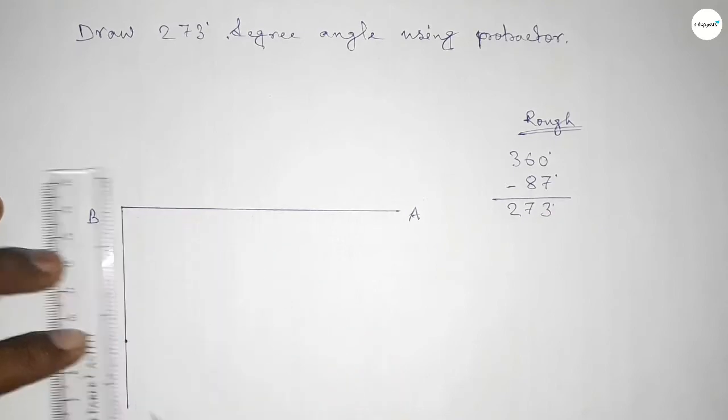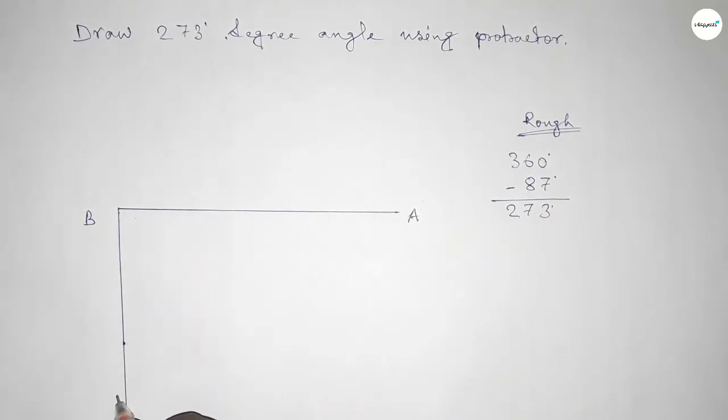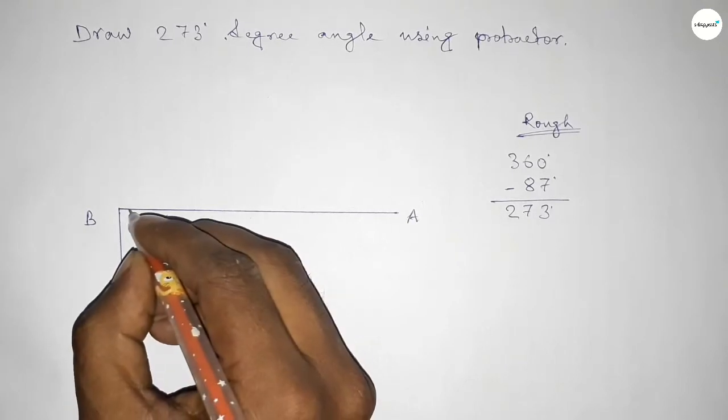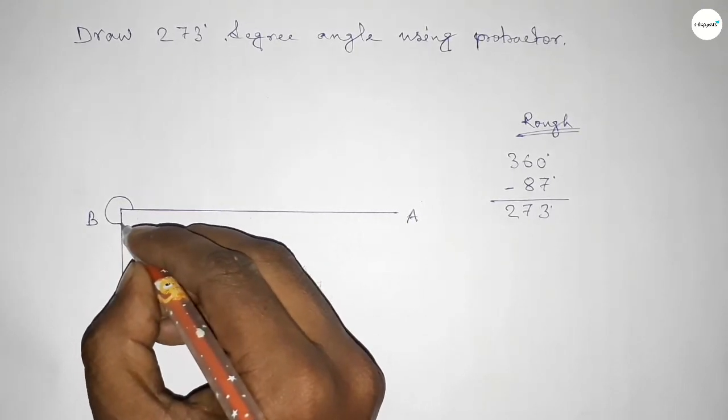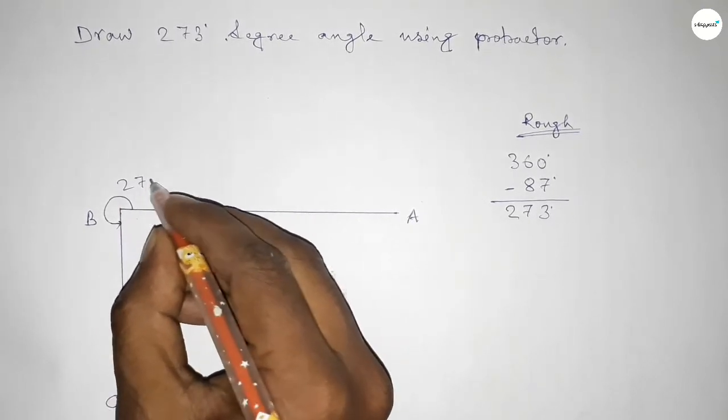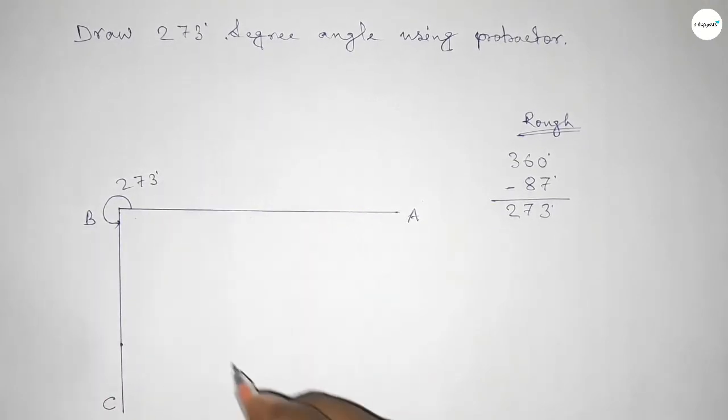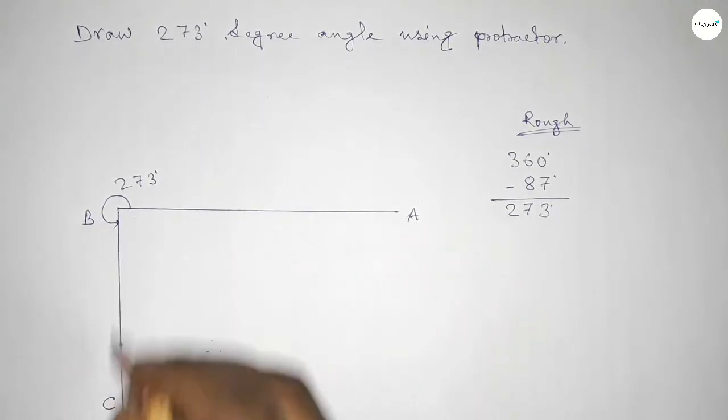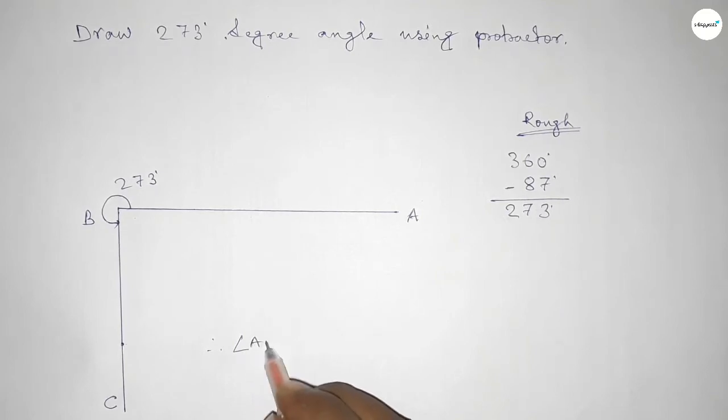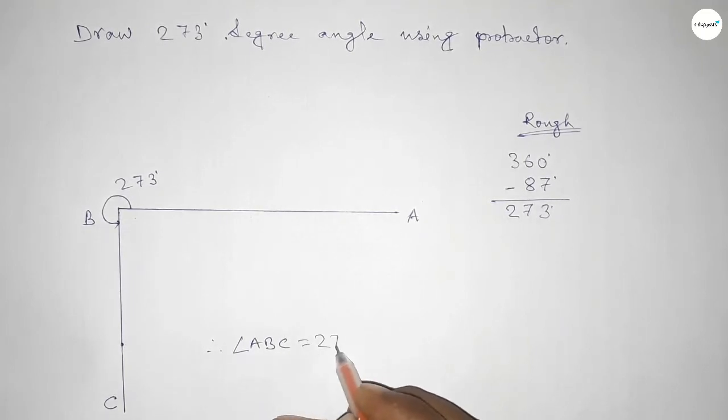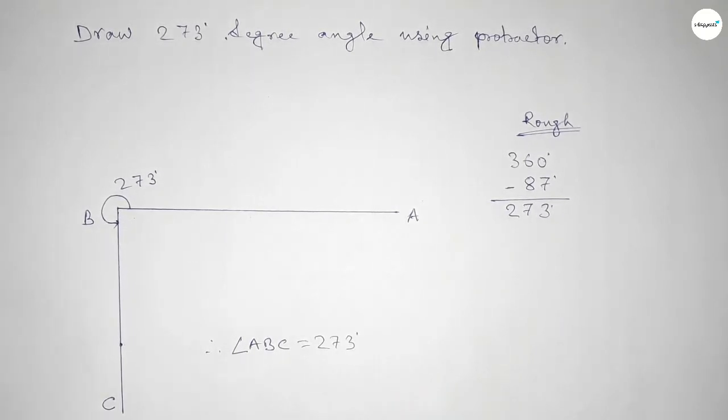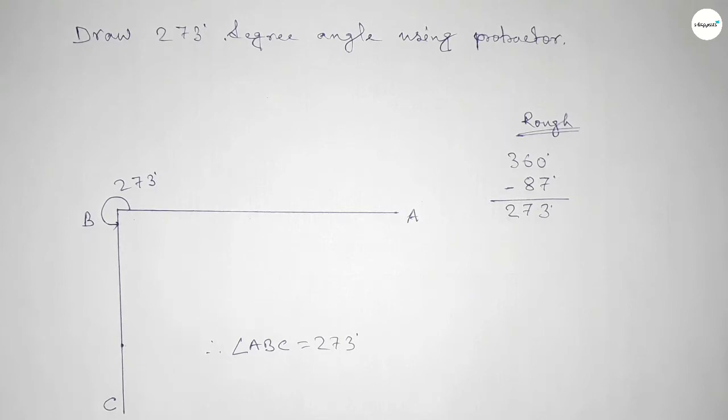So angle ABC up to this is 273 degree angle. So therefore angle ABC equal to 273 degrees. That's all, thanks for watching. If this video is helpful to you then please share it with your friend. Thanks.